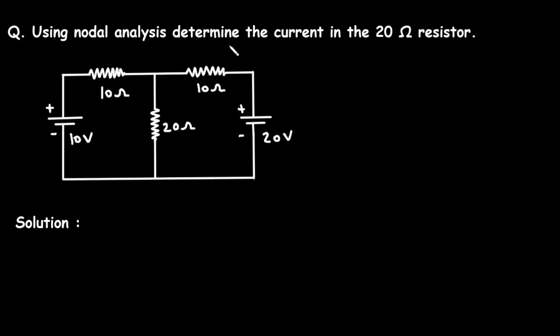Using nodal analysis, determine the current in the 20 ohm resistor. Here in this circuit, we have to find the current through this 20 ohm resistor by using nodal analysis.